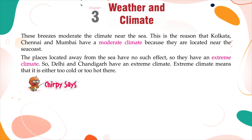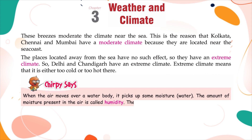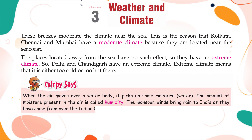Chirpi says: when the air moves over a water body, it picks up some moisture. The amount of moisture present in the air is called humidity. The monsoon winds bring rain to India as they have come from over the Indian Ocean.